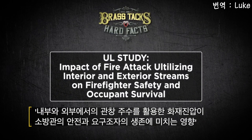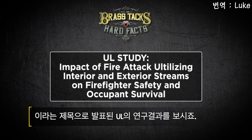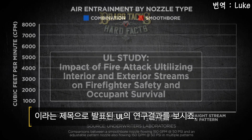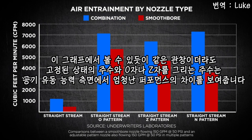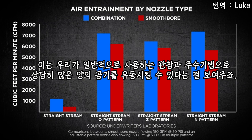Consider the following data recently published by Underwriters Laboratories. The title of the research is 'The Impact of Fire Attack Utilizing Interior and Exterior Streams on Firefighter Safety and Occupant Survival.' As this bar graph shows, the air movement caused by one type of nozzle held stationary and then the same nozzle moved in a typical fire ground fashion shows vastly different amounts of air movement. It shows that our commonly used nozzles and fire attack techniques move considerable amounts of air inside the fire compartment.